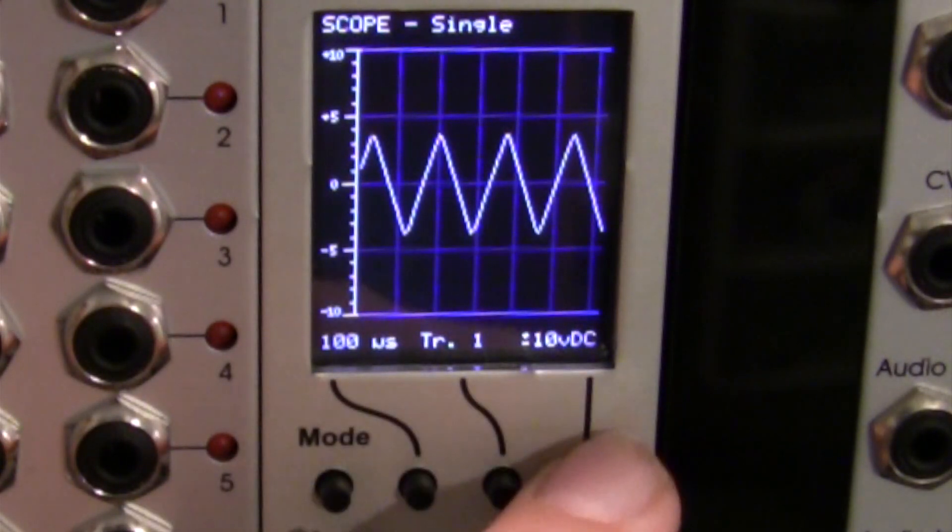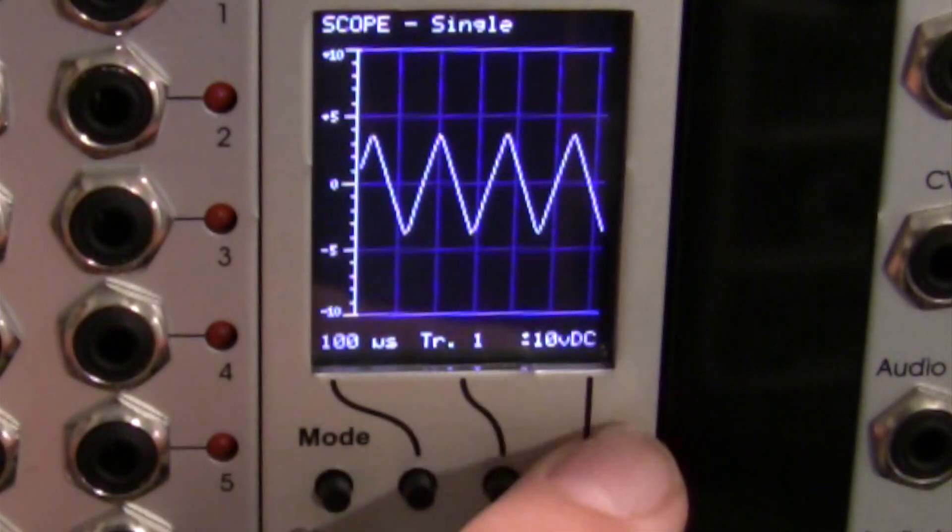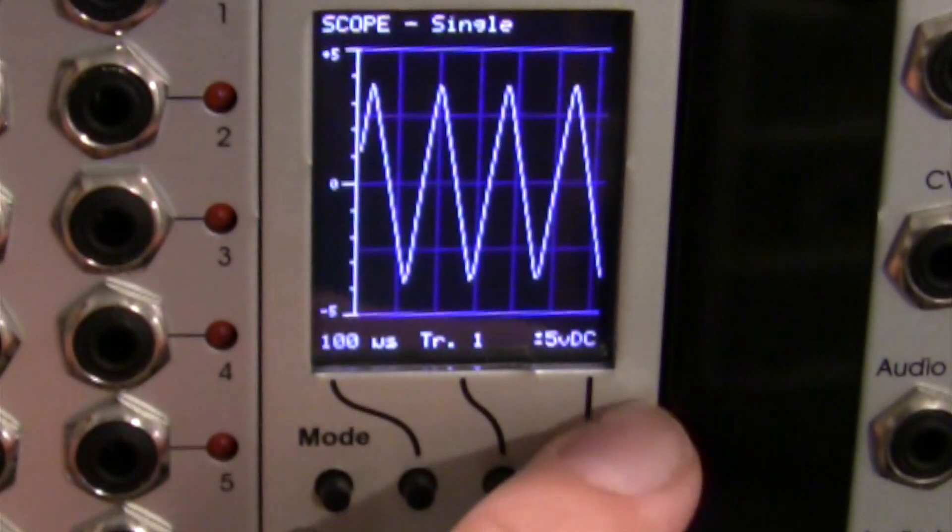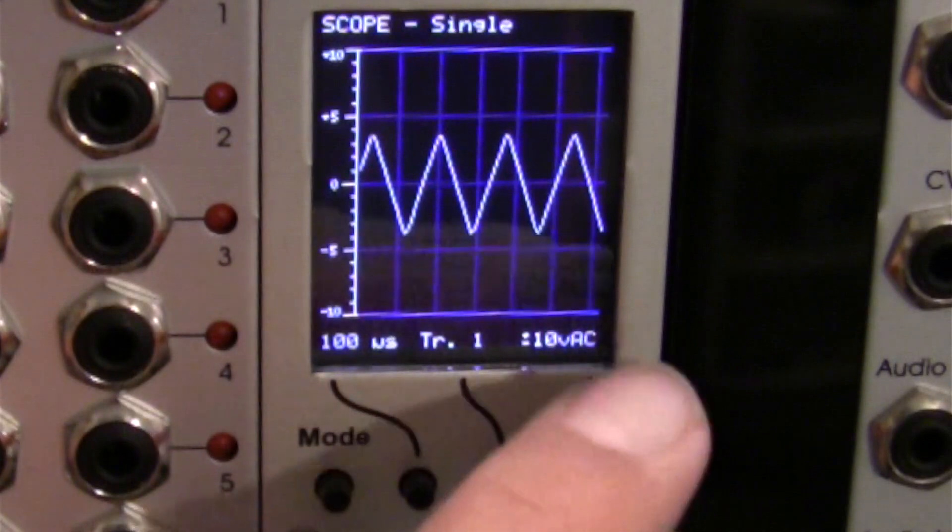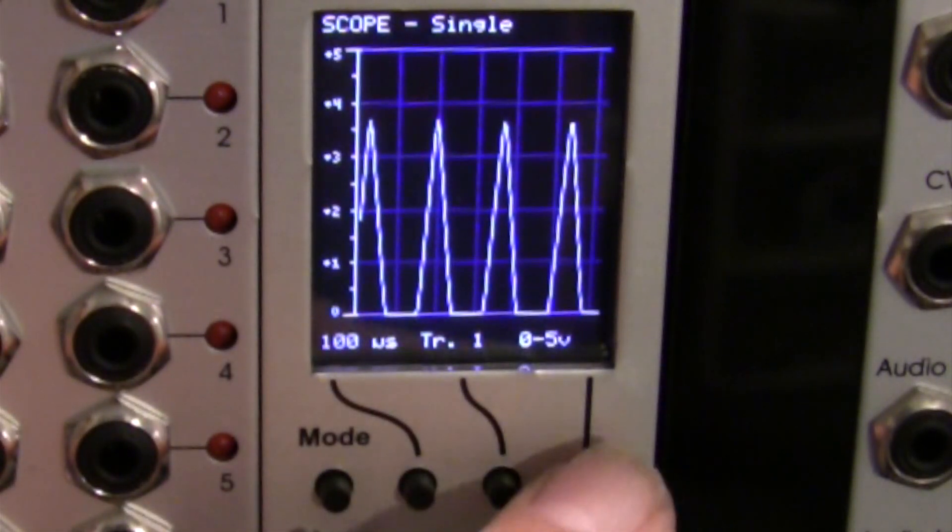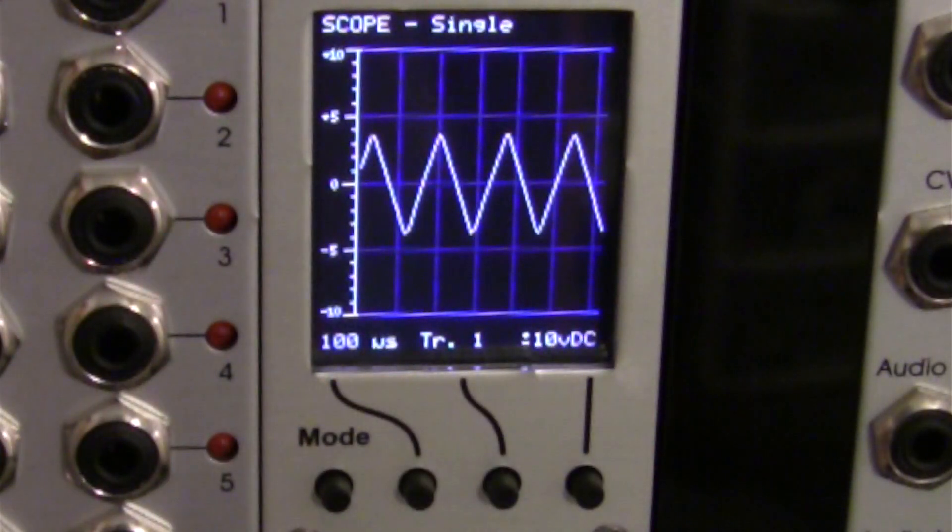And immediately to the right of that, you have our voltage scale. So right now I'm in plus or minus 10 volts DC. But if I wanted to change that, I could. So right now I'm in plus or minus 5 volts DC, or plus or minus 10 volts AC, 0 to 10 volts, 0 to 5 volts, and then back to square one.